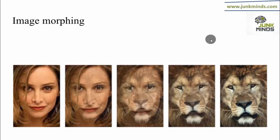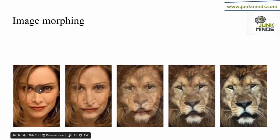Morphological operations can also be applied to grayscale images, such as where light transfer functions are unknown and therefore their absolute pixel values are of no or minor interest. This is an example of image morphing where a face is slowly transformed and mapped to an animal.